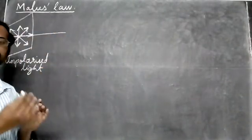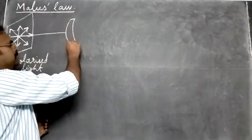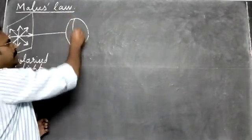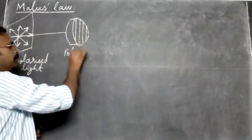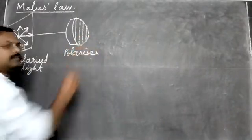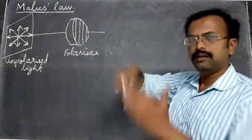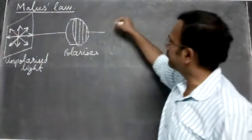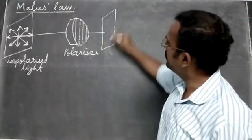Unpolarized light means light vibrates in all directions. Now this unpolarized light we must make polarized. For that we use a polarizer. The polarizer makes it vibrate in the vertical plane only. This polarizer gives out linearly polarized waves in the vertical direction.